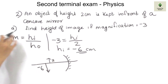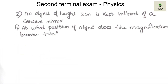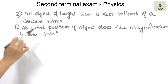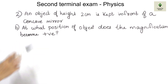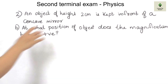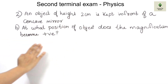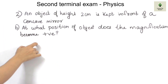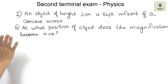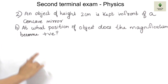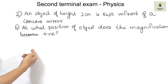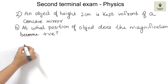Let's go to the second part of the question. At what position of the object does the magnification become positive? We have the height of the object as 2 cm and magnification as minus 3, giving an image of 6 cm. Now the question is: if magnification is positive, where is the object? Currently the magnification is negative.